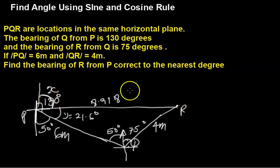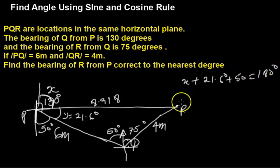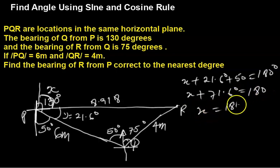X plus 21.6 degrees plus 50 equals 180 degrees. That's angle on a straight line. So X plus 71.6 degrees equals 180. Then, X will be equals to 180 minus 71.6 degrees. X equals 108.4 degrees.